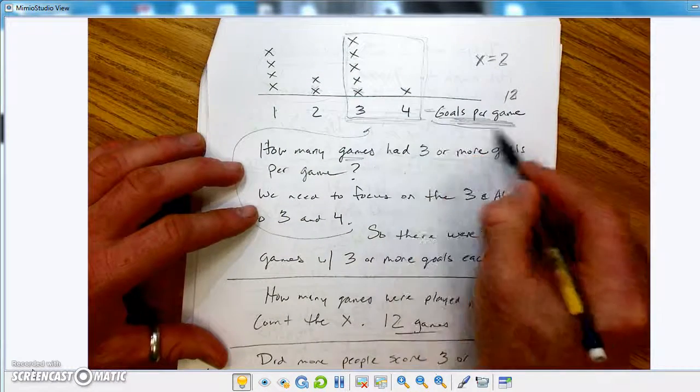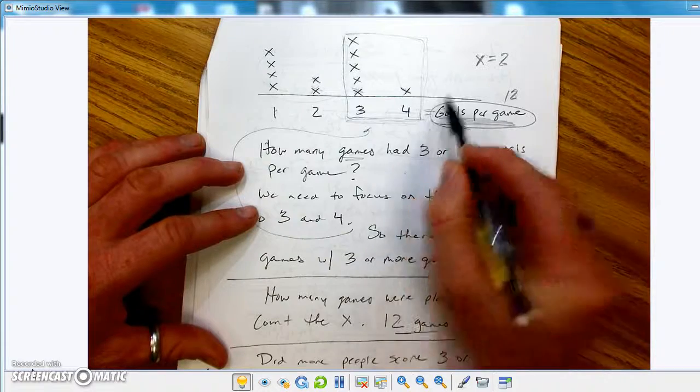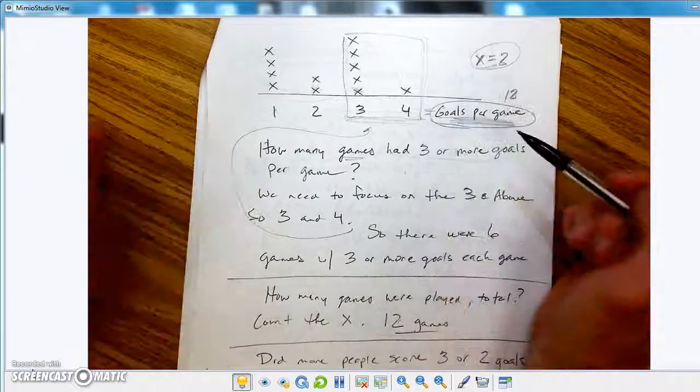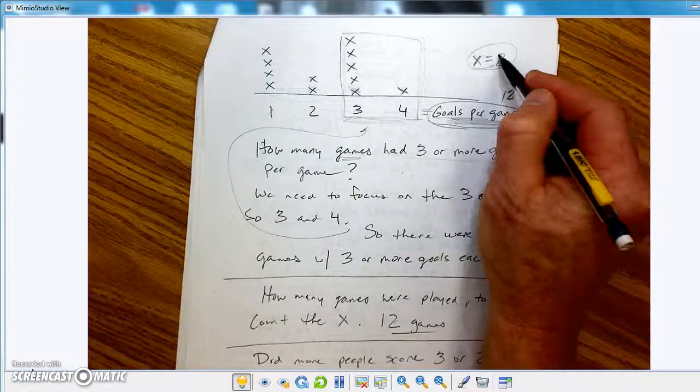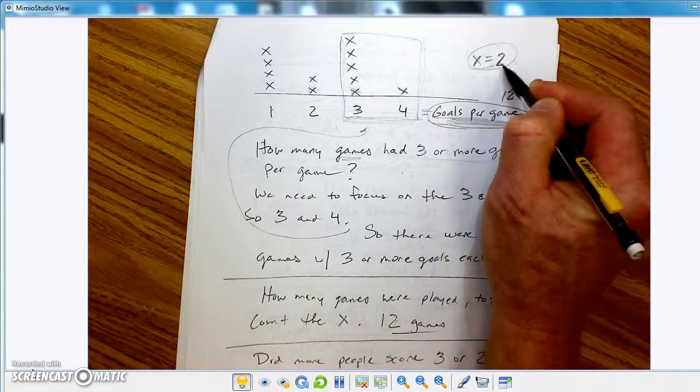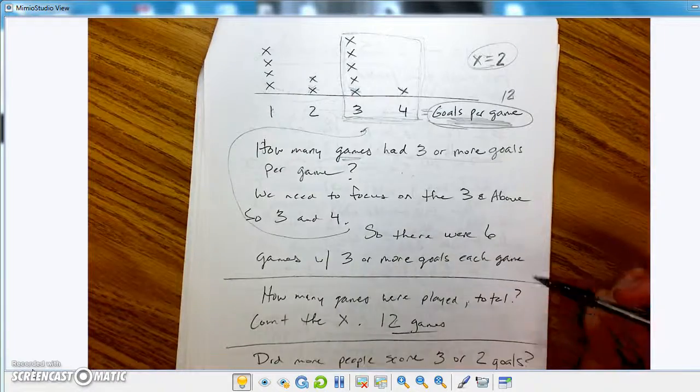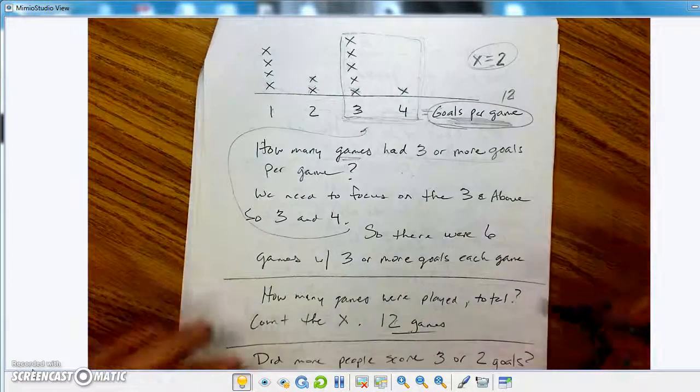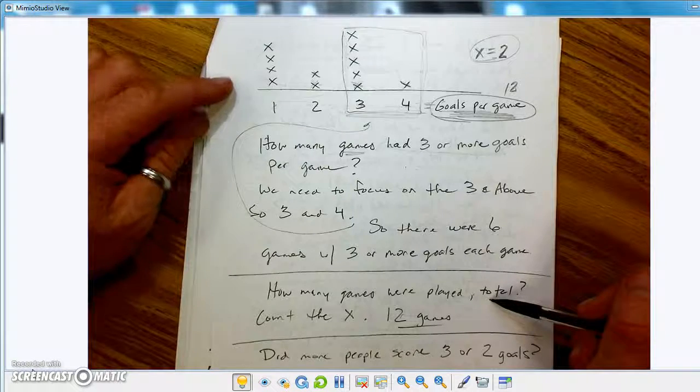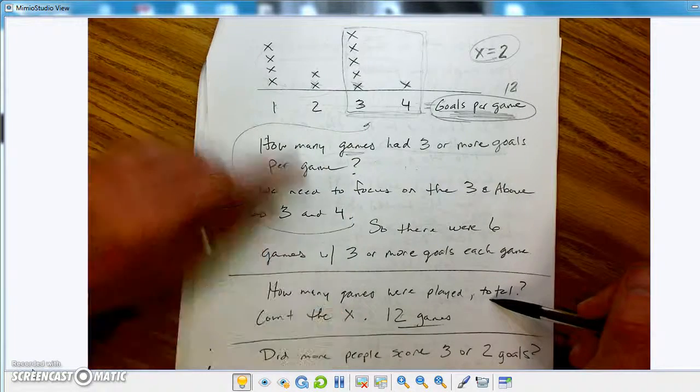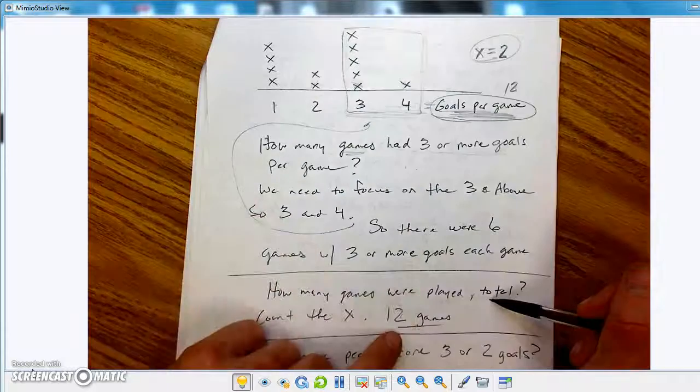Now, what if x stood for 2, like 2 games? So that would be 2 for each of these. So you'd go 2 times, what did we count? 6. And so that would be 12 instead. So just pay attention. Things to pay attention to is, like, what's down here? And then, most likely, the little x's or the plots are going to be 1.